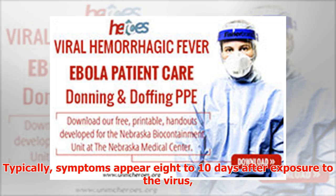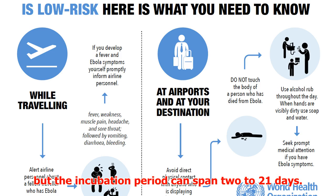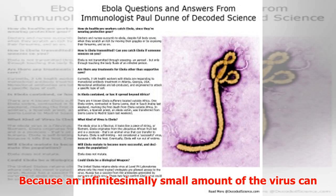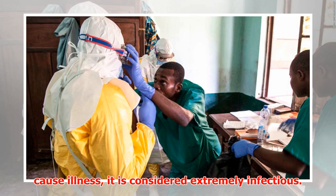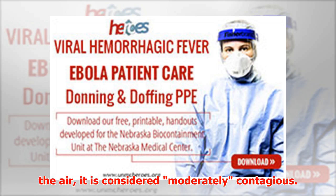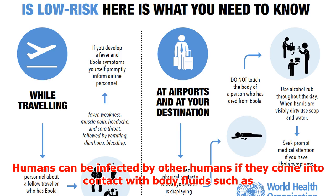Bleeding, including internal and usually massive hemorrhage especially in the gastrointestinal system, occurs only in fatal cases. Typically symptoms appear 8 to 10 days after exposure to the virus, but the incubation period can span 2 to 21 days. Scientists say Ebola is extremely infectious but not extremely contagious — because an infinitesimally small amount of the virus can cause illness, it is considered extremely infectious. However, because the virus is not transmitted through air, it is considered only moderately contagious.